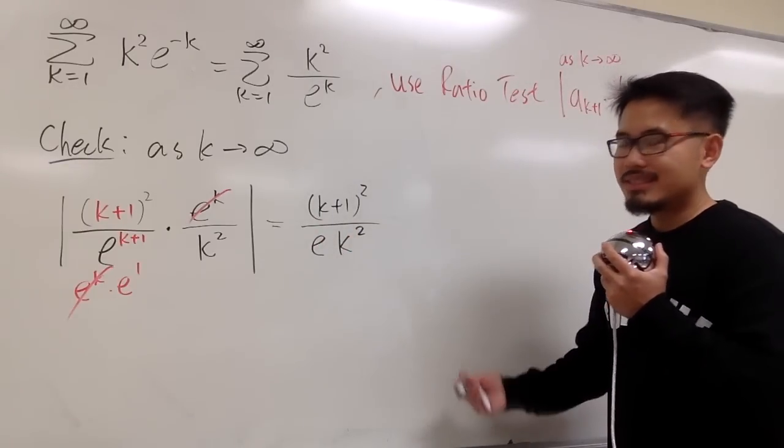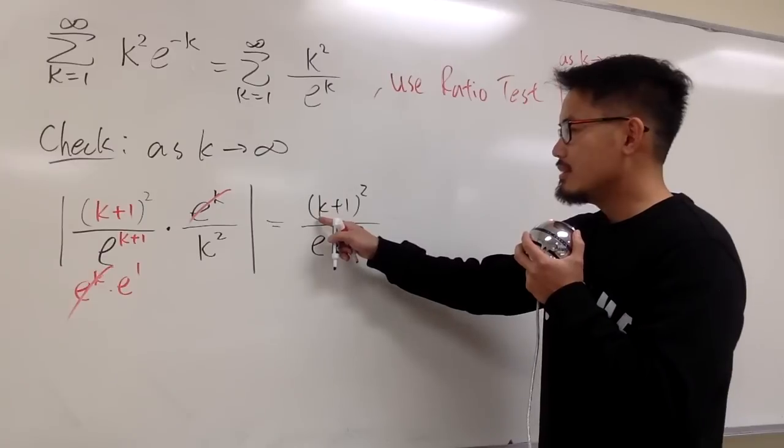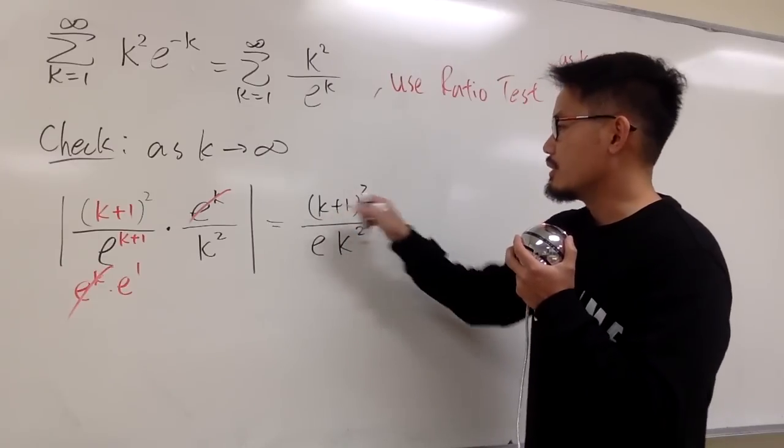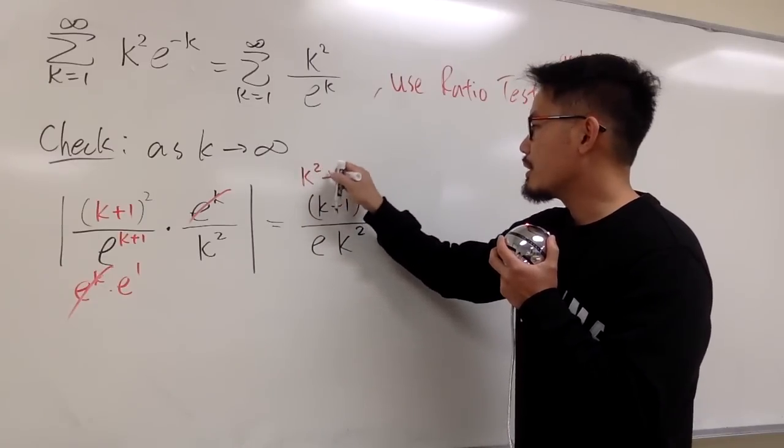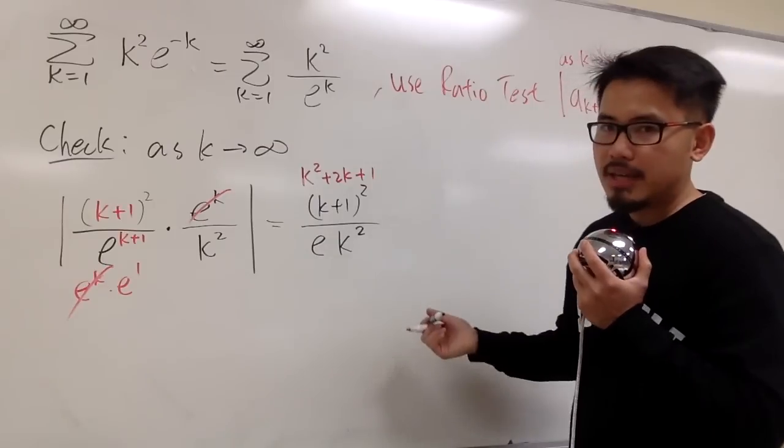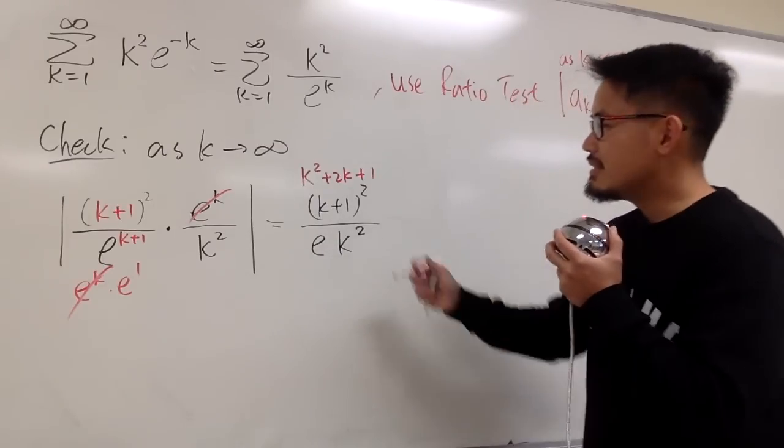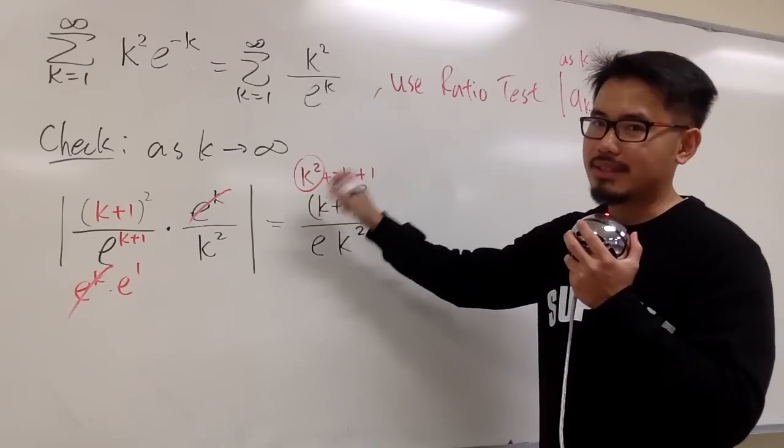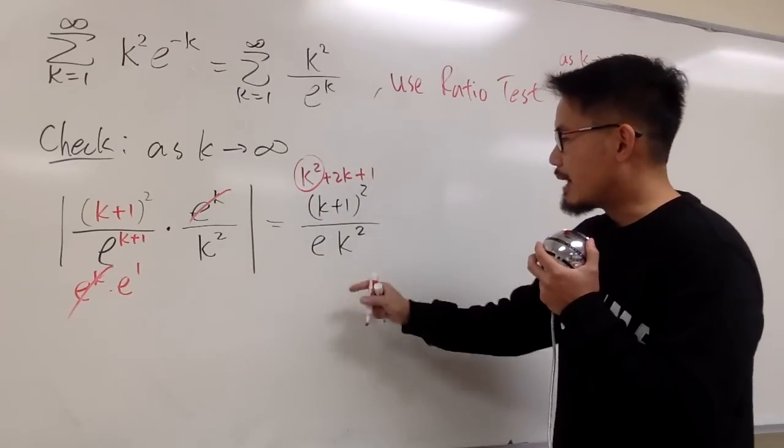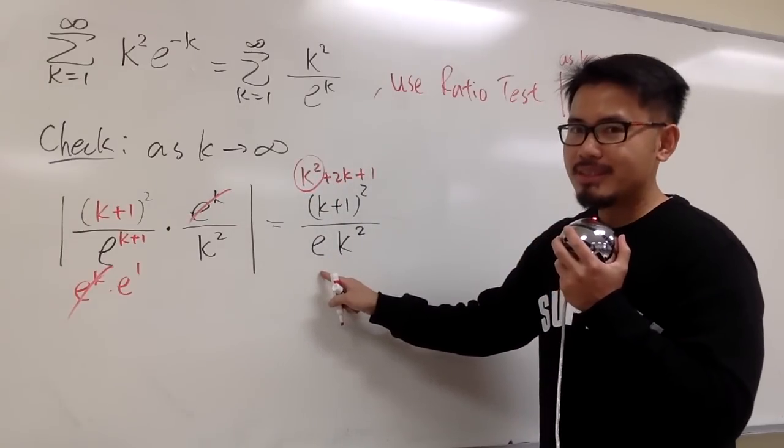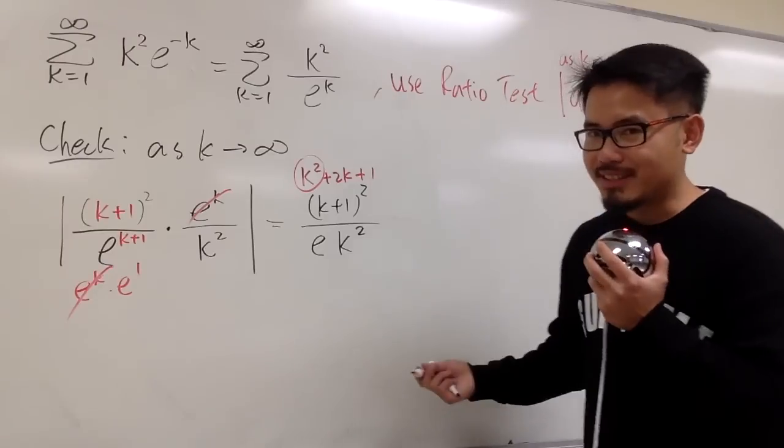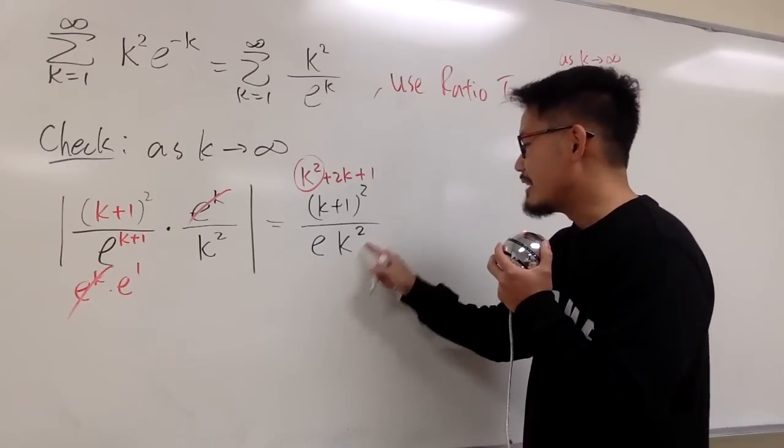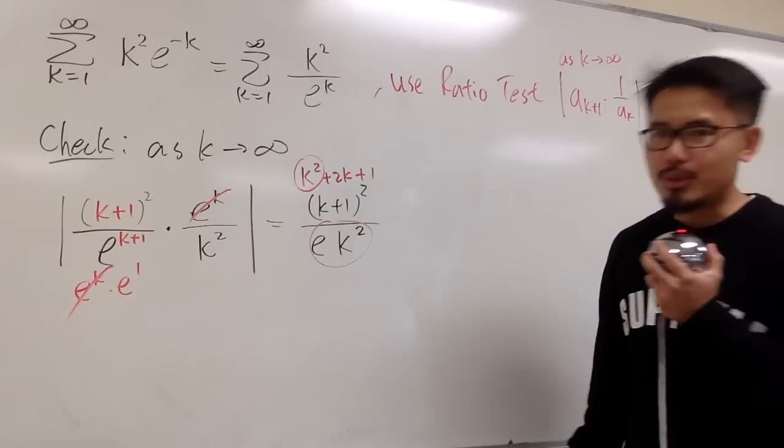All right. How can we take the limit? On the top, this is (k+1) squared, so it's the same as saying k squared plus 2k plus 1. And this is the most dominating part, the highest power, the k squared, right? On the bottom, this is just a number, remember, this is the number e, like 2.7 something,